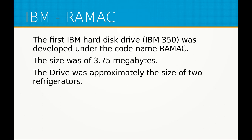The first IBM hard disk drive was developed under the code name RAMEC. The storage size was 3.75 megabytes, and the drive was approximately the size of two refrigerators. This was the beginning of data storage technology.